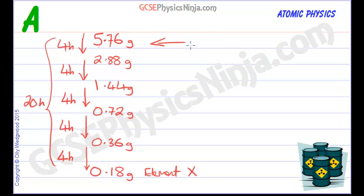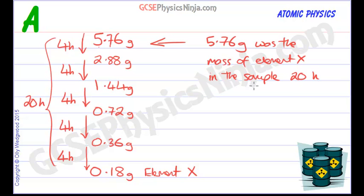So 5.76 grams was the mass of element X in the sample 20 hours before it was tested. And all because we know that every half-life that passes, we lose half the mass of the radioactive element as it decays into a new element. And so that is a half-life calculation working backwards in time using the half-life of an element.